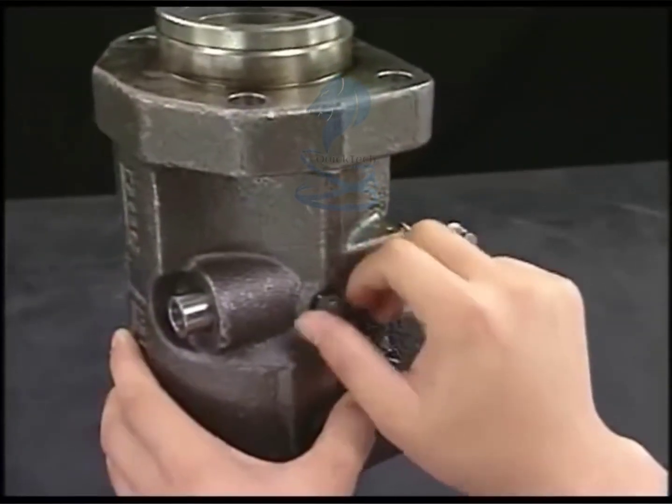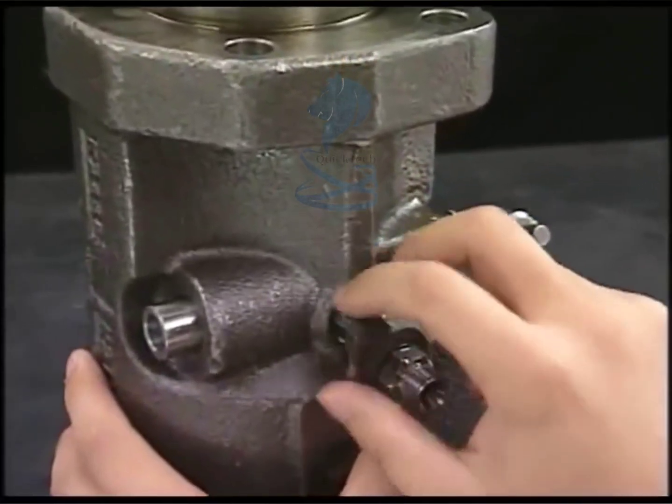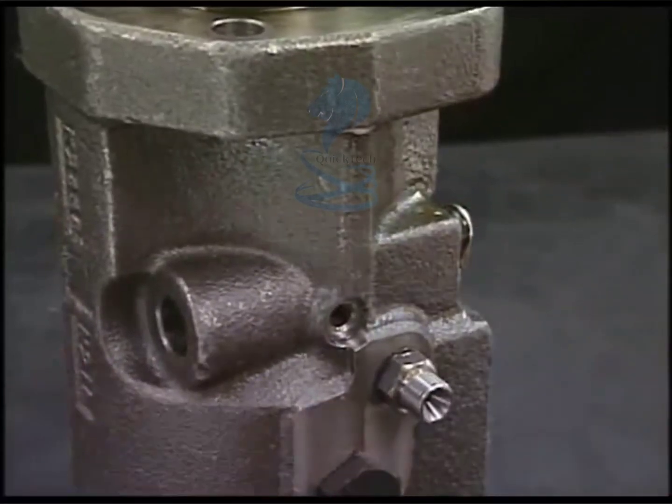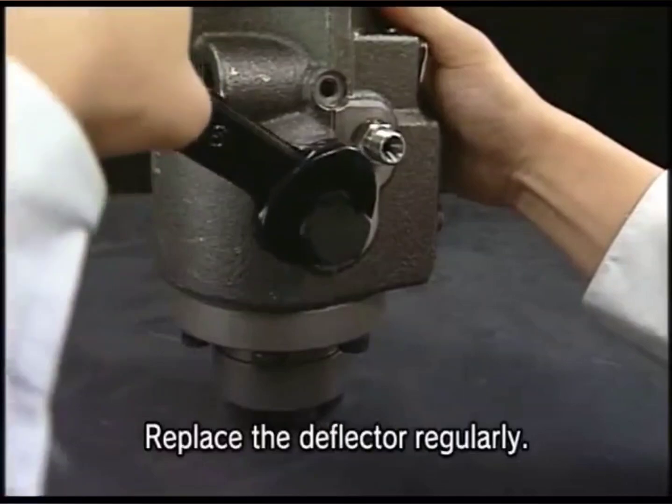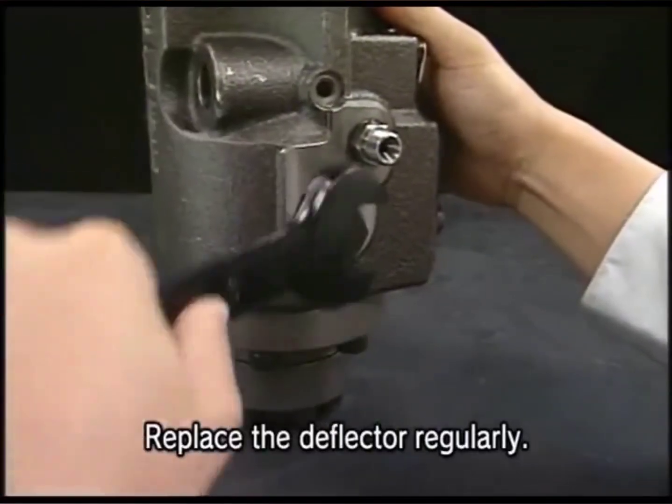Detach the rack lock bolt and remove the rack. Remove the deflector which is set to the center of fuel injection pump. There are two deflectors.